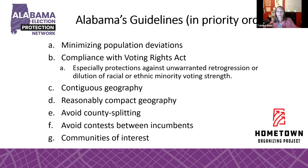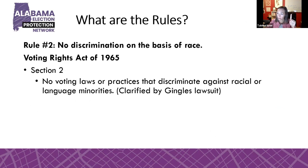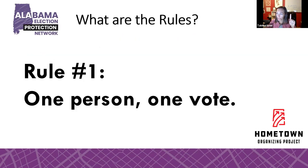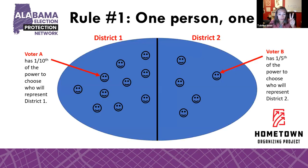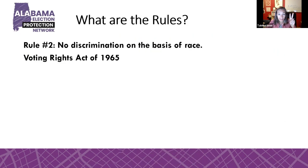Those are the only two rules. One: one person, one vote. And two: no racial discrimination, which is mostly about Section 2 of the Voting Rights Act. In addition to those two rules, we have some guidelines. The Alabama State Legislature has put forward guidelines for redistricting, and these are them — paraphrased to fit on a slide.